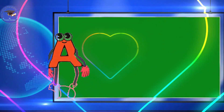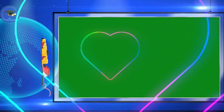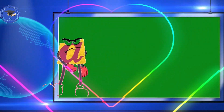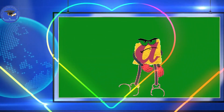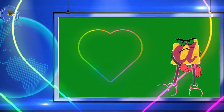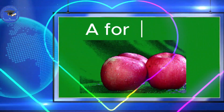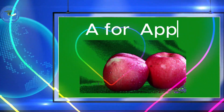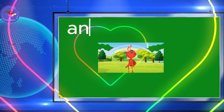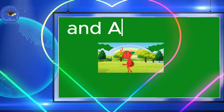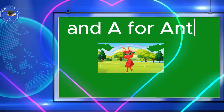Hello! I'm the capital letter A and I'm the small letter a. You spell my name A. A for apple — A-P-P-L-E. And A for ant — A-N-T.